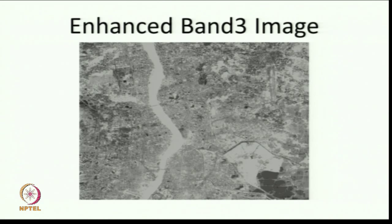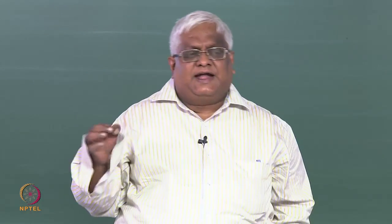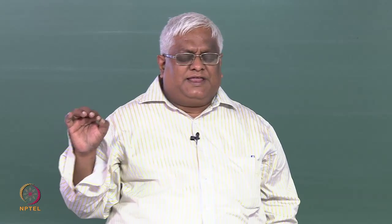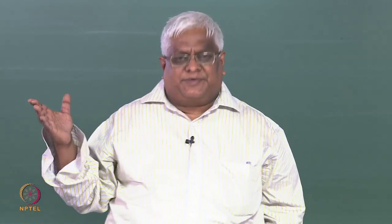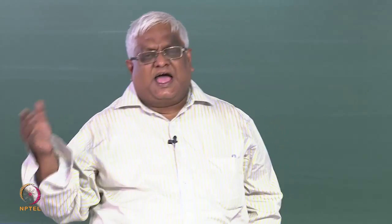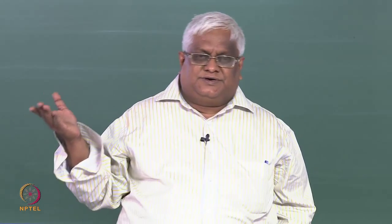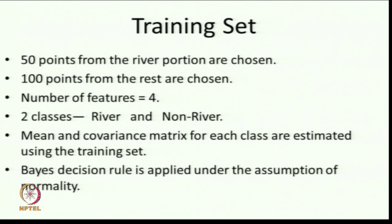And then this is the red band. Now let me talk about training sets. The problem is you need to classify each pixel into one of the land cover types. Here I want to do a simple problem where each pixel is put into one of two classes: one class is river water, and the other class is non-river. Non-river includes pond regions as well as land — buildings, barren land, gardens, and all other things. This is the basic classification problem under consideration.